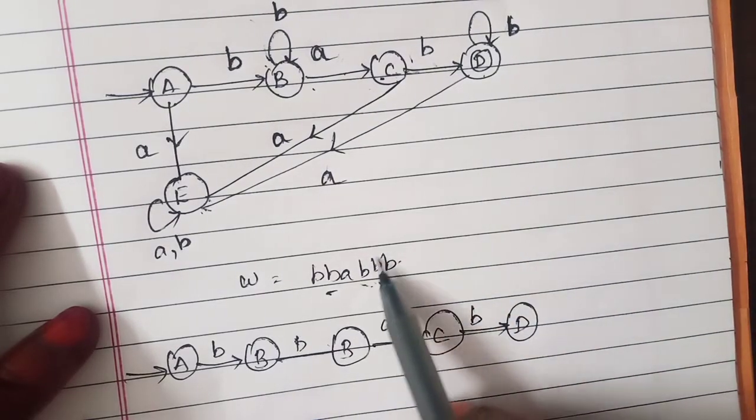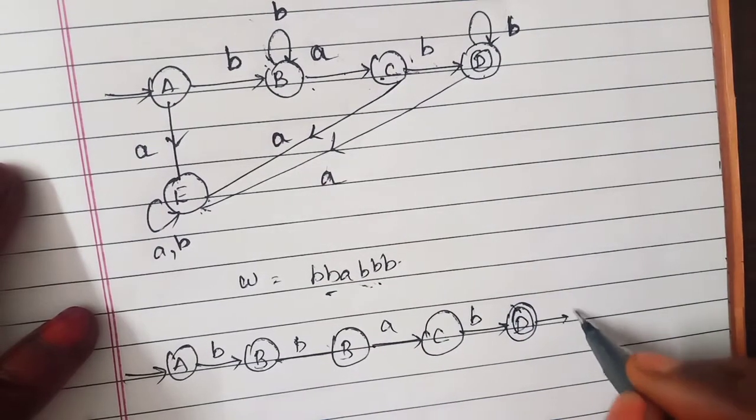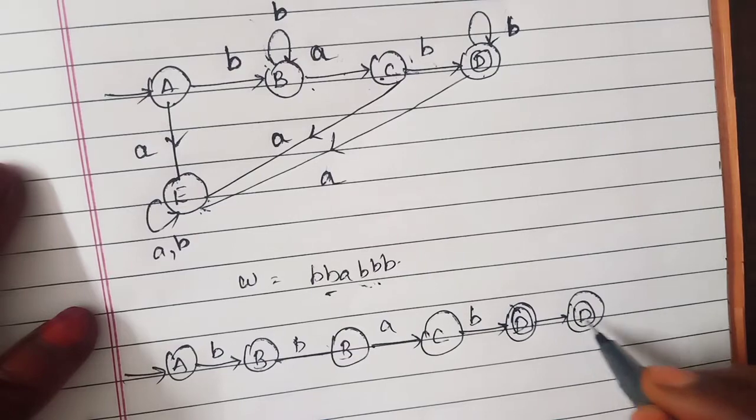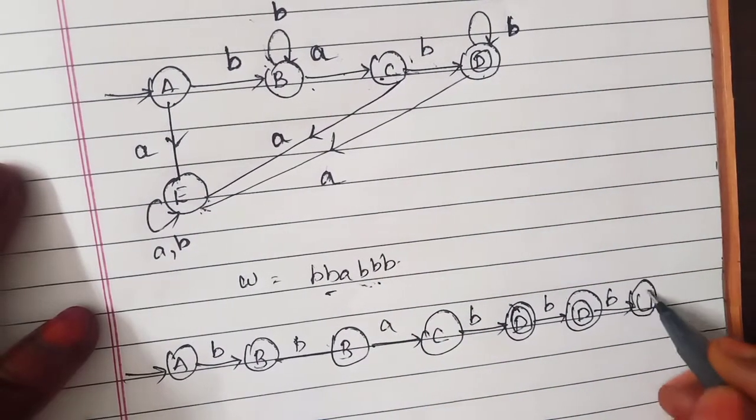And another b, so anyway it is a final state so it is also in D. And after that it again gets an input b, it stays in that state only.